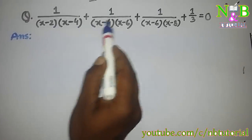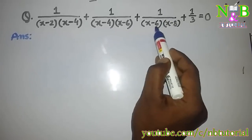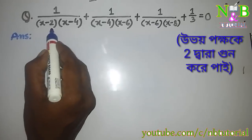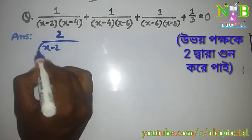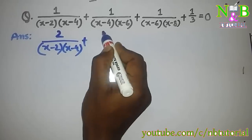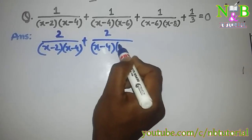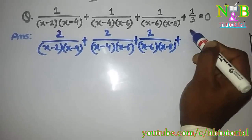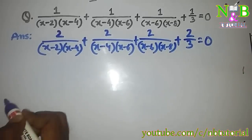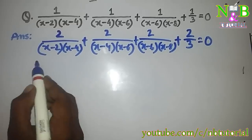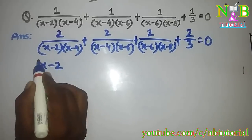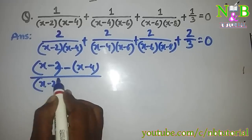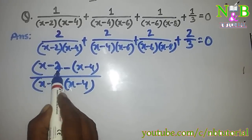1 by x-2 into x-4 plus 1 by x-4 into x-6 plus 1 by x-6 into x-8 plus 1 by 3 is equal to 0. We have 1 by x-2 into x-4 plus 2 by x-4 into x-6 plus 2 by x-6 into x-8. And 1 by x-2 into x-4 plus 2 by x-2 into x-4.